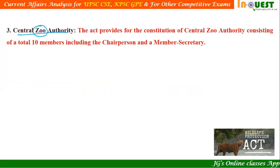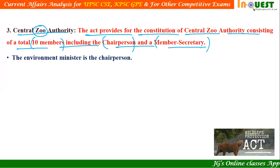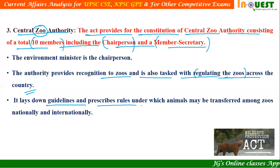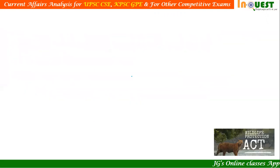The Central Zoo Authority takes care of zoos in the country. The act provides for the constitution of the Central Zoo Authority consisting of 10 members total, including the chairperson and member secretary. The Environment Minister is the chairperson. The authority provides recognition to zoos and is tasked with regulating zoos across the country. It also lays down guidelines and prescribes rules under which animals may be transferred among zoos nationally or internationally.